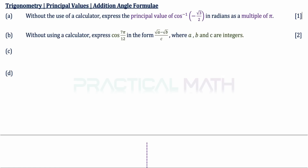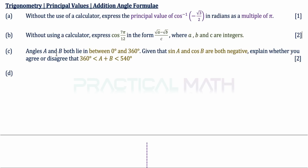In part B, without using a calculator, express cosine 7π over 12 in the form of root A minus root B divided by C, where A, B and C are integers — a two mark question. In part C, angles A and B both lie between 0 and 360 degrees. Given that sine A and cosine B are both negative, explain whether you agree or disagree that the sum of A and B is in the range 360 to 540 degrees, not inclusive — also two marks.